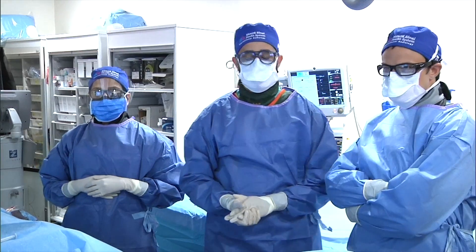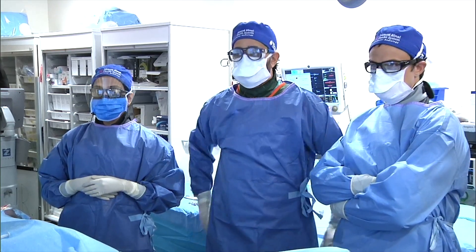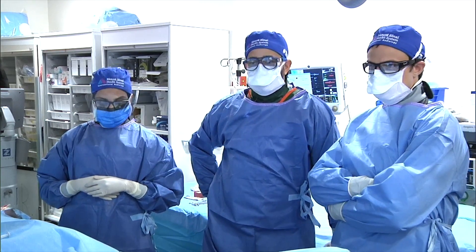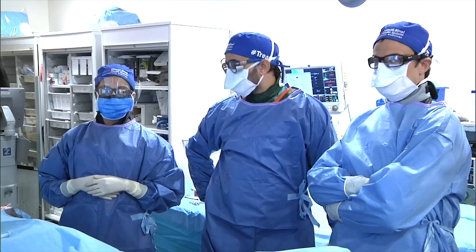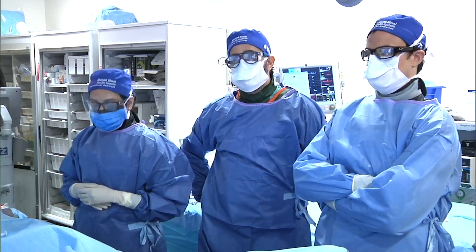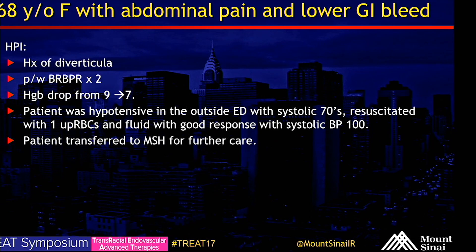We have an interesting case here that sort of showed up today. Dr. Ranade is going to describe the case and show you what we're doing and what we've done so far, and you can tell us whether you think we're crazy or not. This is a 68-year-old female that presented to an outside hospital with lower GI bleed. She has a history of diverticula, and a CTA done outside showed that this was a diverticular bleed.